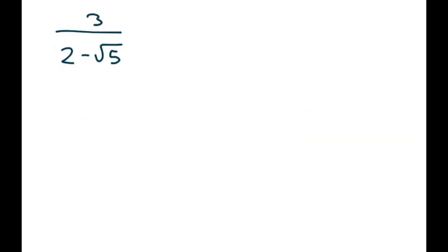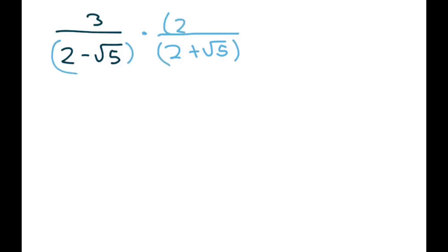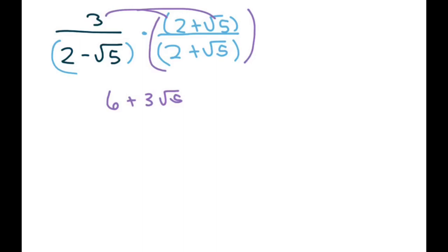We're going to go a little faster — these next examples are a little easier. We're going to multiply by the conjugate of the denominator, so the conjugate is going to be 2 plus square root of 5. Since I'm multiplying the denominator by this, I also must multiply the numerator by it, because this whole thing equals 1. The numerator is just going to be 6 plus 3 square root of 5 — I just distributed the 3. The denominator is going to be a squared minus b squared, so that's 2 squared minus square root of 5 squared.